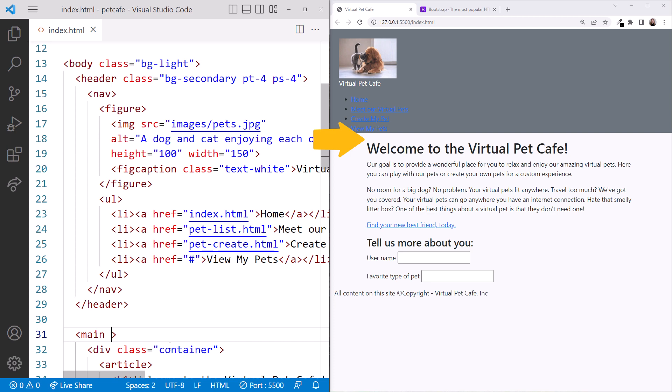We want a little separation between the header and the main element. We add the class attribute to the main element and set the padding top to 4.